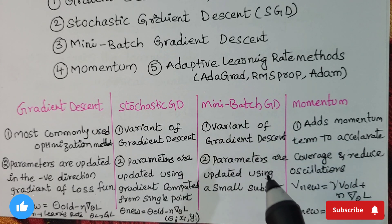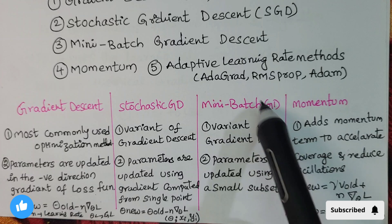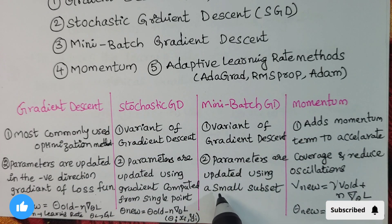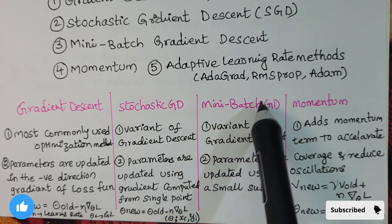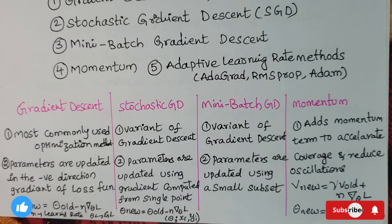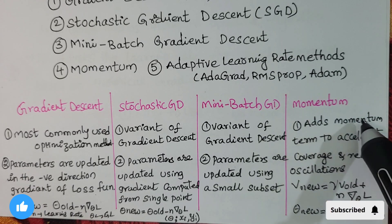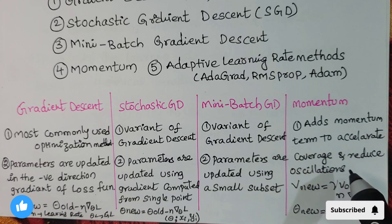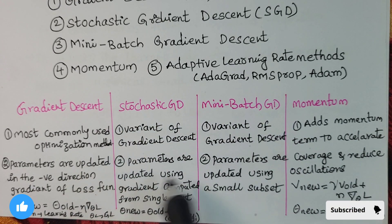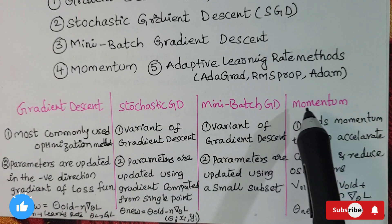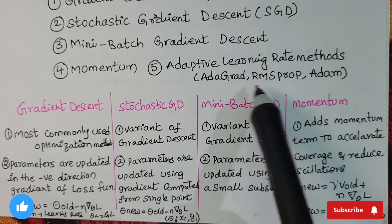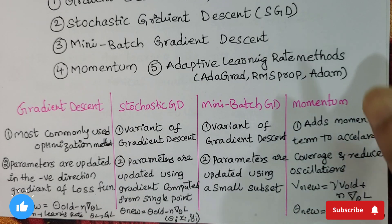Mini-batch gradient descent is also a variant of gradient descent, where parameters are updated using a small subset of the data — as the name 'mini-batch' suggests. Momentum adds a momentum term to accelerate convergence and reduce oscillations. Both stochastic and mini-batch gradient descent derive from gradient descent.